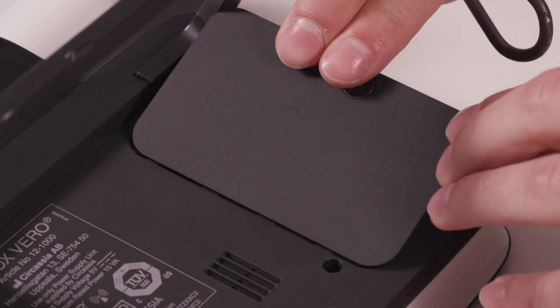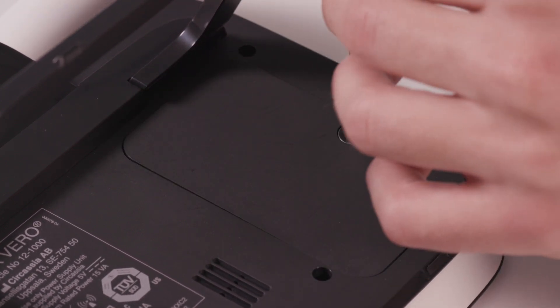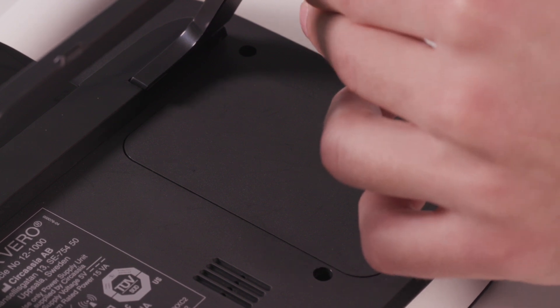Then you can put your back door back on and screw it up with your screwdriver or coin until the screw is tight.